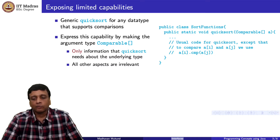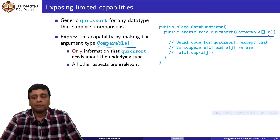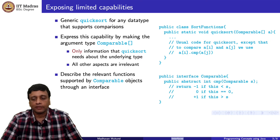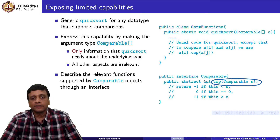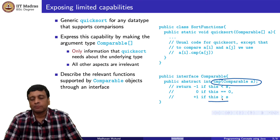The interface we call 'Comparable', and we can ask quicksort to take an array of any object of type Comparable so that we can compare these things using a 'cmp' function defined in that interface. The interface Comparable specifies an abstract function called cmp which takes two objects implementing this interface and returns a value by convention: minus 1 if the current object is smaller, 0 if equal, and plus 1 or a positive number if this object is bigger.